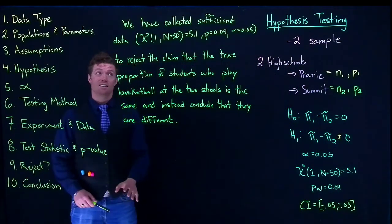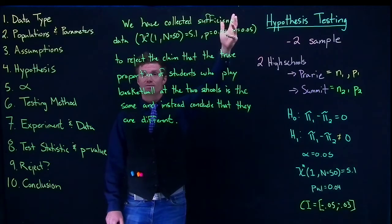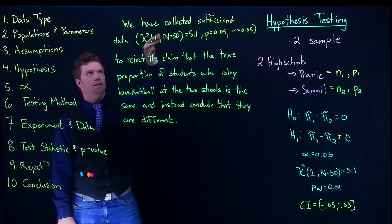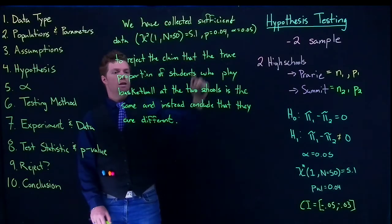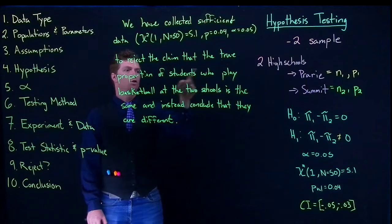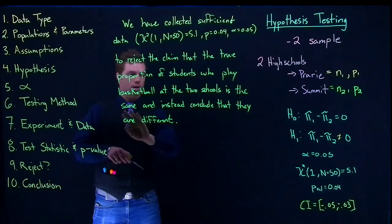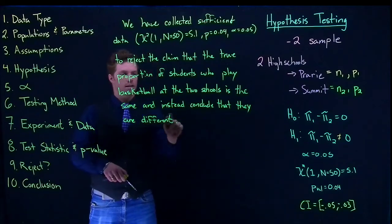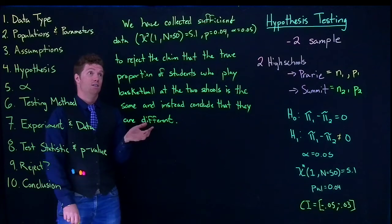Okay, if this was insignificant, so if I had a p-value of 0.09 or something, then the only thing that would have to change is that we have collected insufficient evidence to reject the claim that the true proportion of students who play basketball at the two schools is the same, and then I could get rid of the alternative conclusion. So it's a lot shorter if we have insignificant evidence.